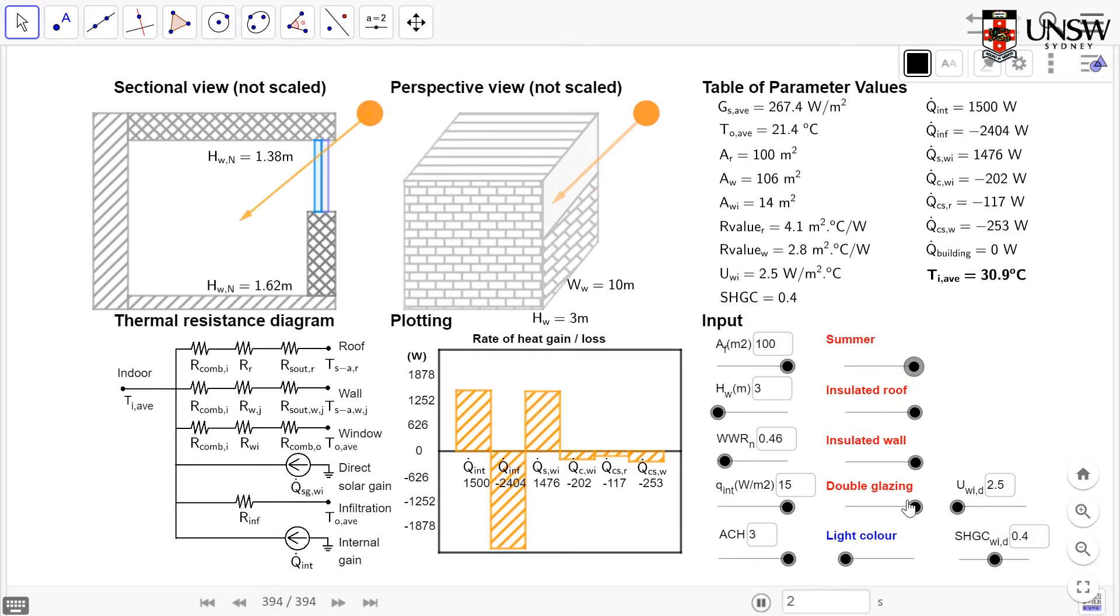So you can play around with all of these values. We'll have a look at altering the window to wall ratio. And you'll see that alters your simulation up here. And then you'll also notice that your total internal gains, your total solar gains from your window will also increase with your window to wall ratio.